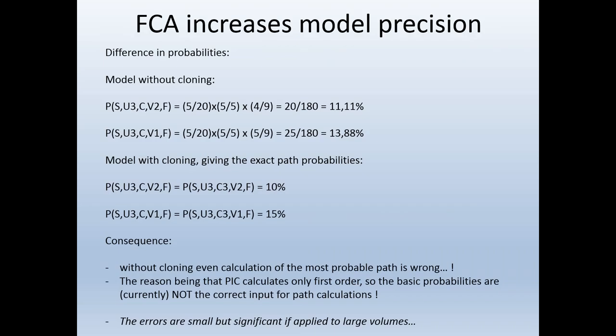Let us look at the model precision obtained with non-normalized and normalized hidden Markov models. The model without cloning, if we take sequence S to U3, U3 to C, C to V2, V2 to F, this has a probability of 11.11%. If we take sequence S to U3, U3 to C, C to V1, V1 to F, this has a probability of 13.88%. In the model with cloning, which gives the exact path probabilities, these probabilities are 10% and 15% respectively. These are also the probabilities which we could derive immediately from the concept lattice, even in the presence of these many-to-many transitions.